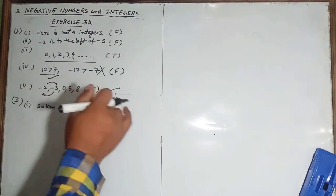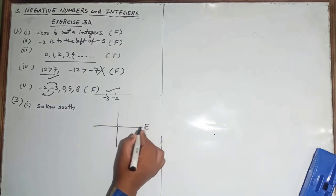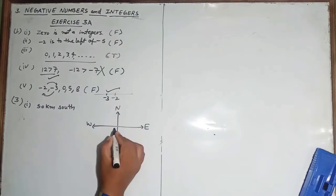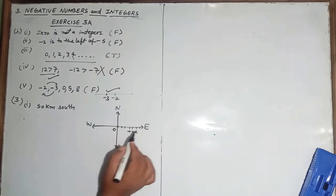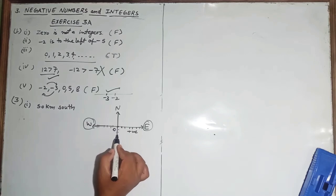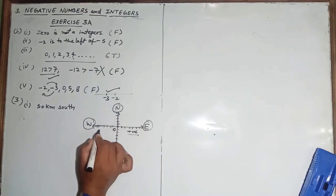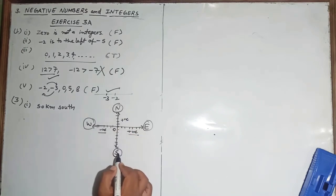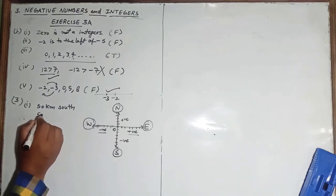Integers can help in many ways, like directions — east, west, north, south. Taking the intersection point as zero, values towards east and north are positive, and towards west and south are negative. So the opposite of 50 kilometers south will be 50 kilometers north.